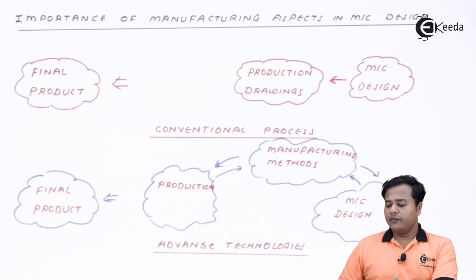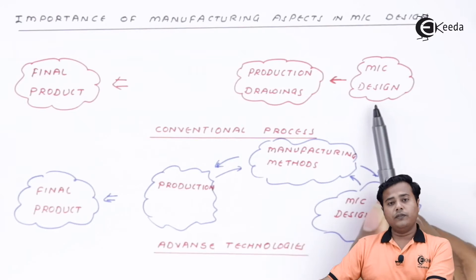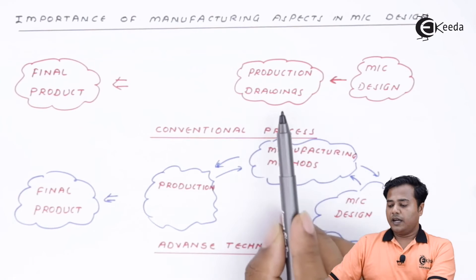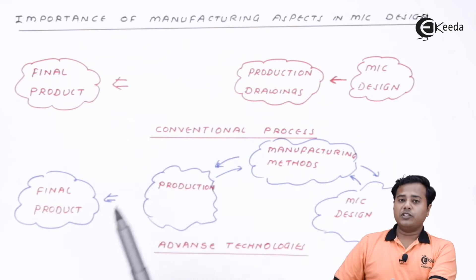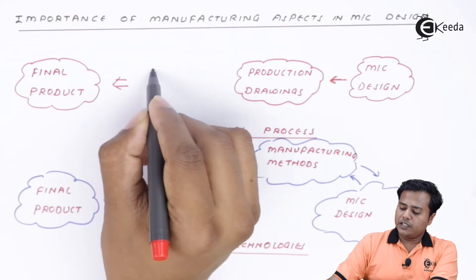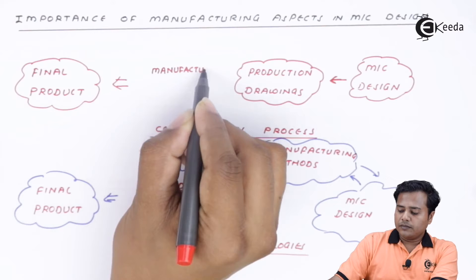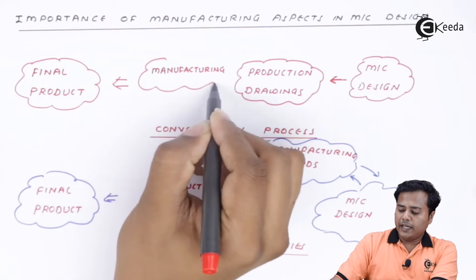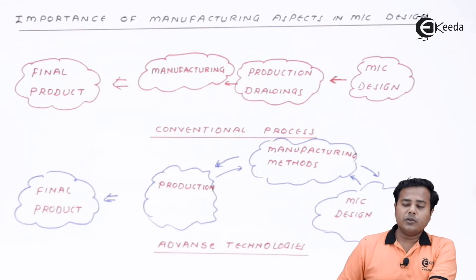The conventional process of overall product design is: we go for machine design, then production drawings are created, after that actual manufacturing takes place, and the final product is done. Now this conventional process has some drawbacks.